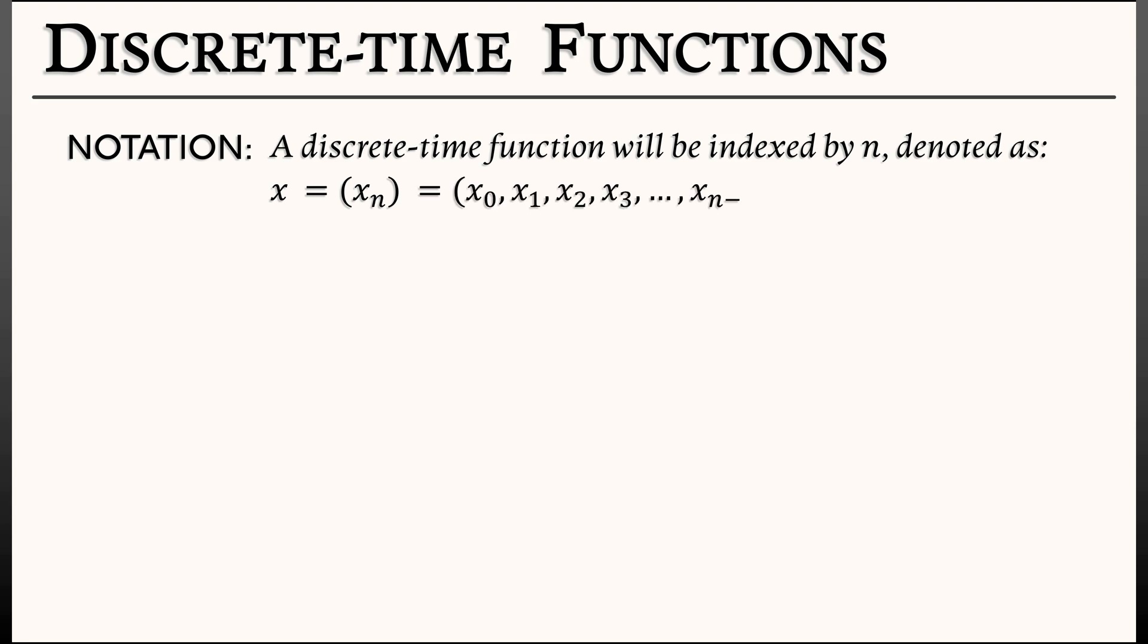Let's talk about discrete-time functions. Our notation is going to be as follows. A discrete-time function is going to be indexed by n most of the time and denoted x. Oftentimes, we'll use parentheses to denote the fact that this is something like a sequence with xn inside. Or maybe we might just expand the whole thing out: x0, x1, x2, etc.